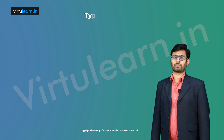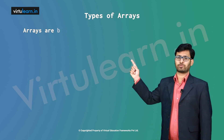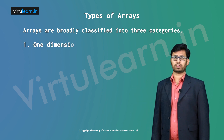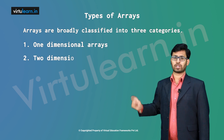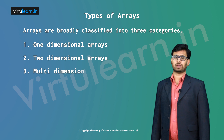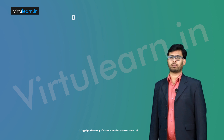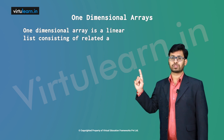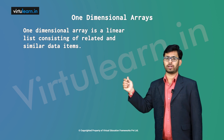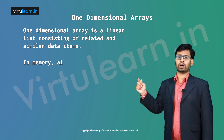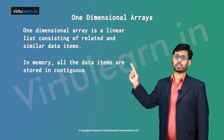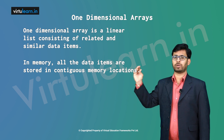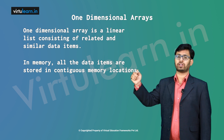The different types of arrays: arrays are classified into three types — one-dimensional array, two-dimensional array, and multi-dimensional array. A one-dimensional array is a linear list consisting of related and similar data items. In memory, all the data items are stored in contiguous memory locations. Contiguous memory location means that if you know the location of the first element, you can easily find the next element's location based on the data type size.